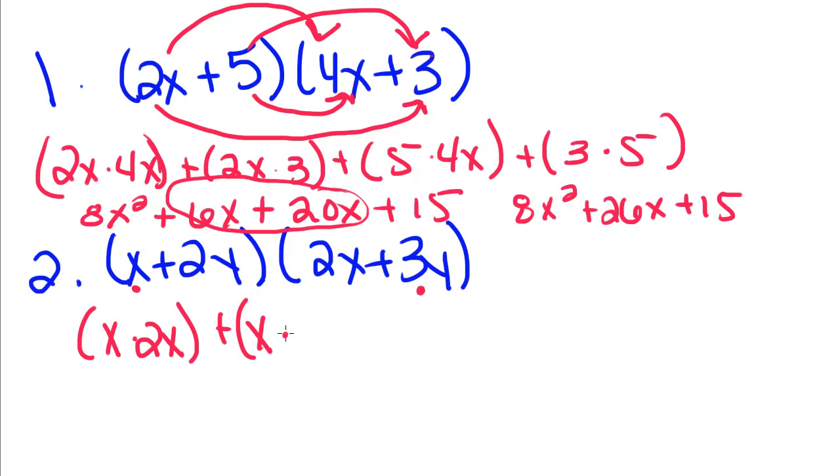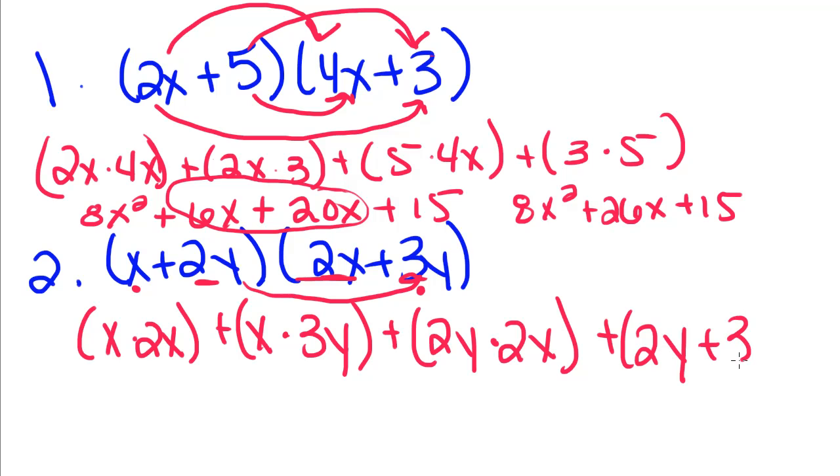Plus inside, times last, plus the last. So x times 2x is 2x squared, plus 3x times y is just 3xy.